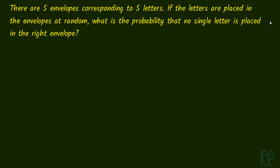Second question: there are 5 envelopes corresponding to 5 letters. If the letters are placed in the envelopes at random, what is the probability that no single letter is placed in the right envelope? So A should not go to small a, B should not go to small b, C should not go to small c, D should not go to small d, and E should not go to small e.